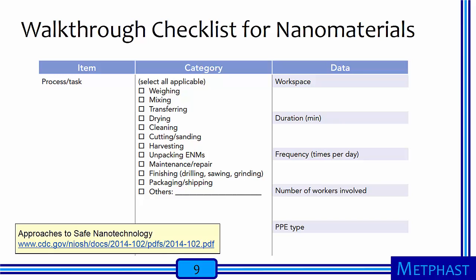During a walkthrough, you should use a checklist to keep track of all the information you need to gather. I show a portion of a walkthrough checklist specifically prepared for assessing nanomaterial exposures in a workplace. This checklist appears in the NIOSH document entitled Approaches to Safe Nanotechnology and is available at the link shown.